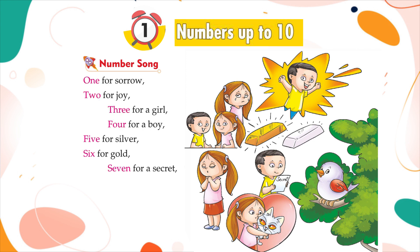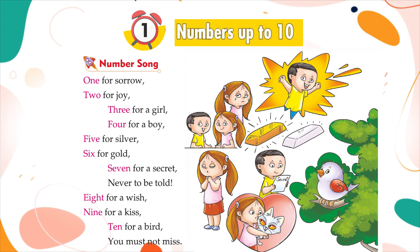Number song: 1 for sorrow, 2 for joy, 3 for a girl, 4 for a boy, 5 for silver, 6 for gold, 7 for a secret never be told, 8 for a wish, 9 for a kiss, 10 for a bird you must not miss.